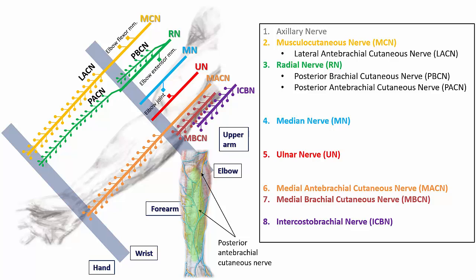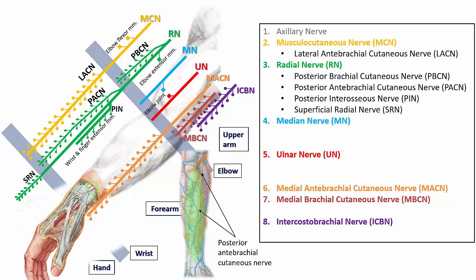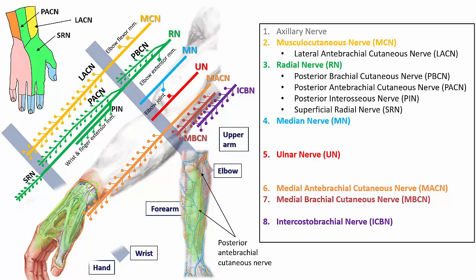Beyond the elbow, the radial nerve divides into a superficial and deep branch. The deep branch, also known as the posterior interosseous nerve, innervates all the major extensor muscles of the wrist and fingers. The superficial branch, also known as the superficial radial nerve, travels deep to the brachioradialis muscle and emerges into the subcutaneous tissues just proximal to the anatomical snuff box on the lateral aspect of the wrist, where it innervates the cutaneous tissues over the dorsum of the lateral hand and thumb.